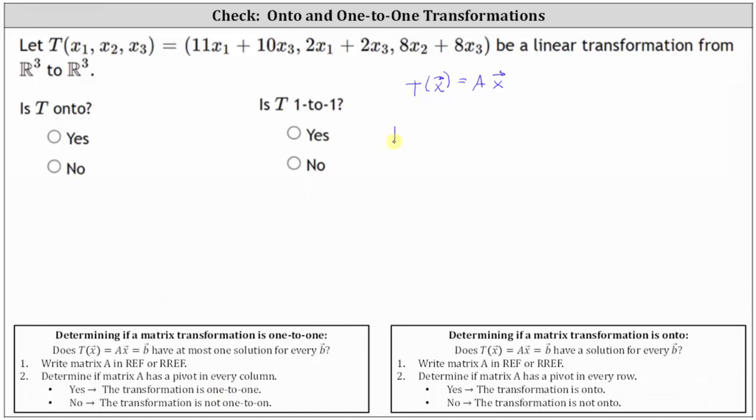So let's first write this as T of vector x equals, let's write the formulas in a column matrix where the first entry is the first equation of 11x₁ plus 10x₃. The second entry is the second equation of 2x₁ plus 2x₃. And the third entry is the third equation of 8x₂ plus 8x₃.